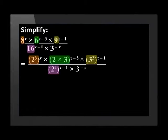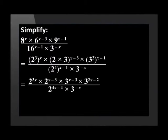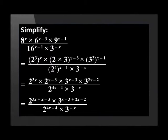Now raise the exponents inside the brackets to those on the outside. So on the top we now have 2 to the power of 3X times by 2 to the power of X minus 3 times by 3 to the power of X minus 3 times by 3 to the power of 2X minus 2. At the bottom we have 2 to the power of 4X minus 4 times by 3 to the power of negative X. On the top we add the exponents for base 2 to get 2 to the power of 3X plus X minus 3. We also add the exponents for base 3 to get 3 to the power of X minus 3 plus 2X minus 2. At the bottom nothing changes as we do not have like bases.